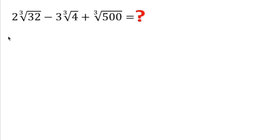So for this I will write 2 into - we can write this cube root of 32 as 2 into 2 into 2 into 4. 2 into 2 into 2 is 8, 8 into 4 is 32.